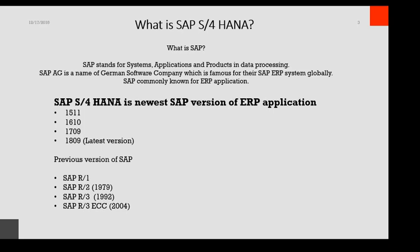There are newer versions and older versions. When we talk about historical versions, we can see that the previous versions of SAP include SAP R1, SAP R2 in 1979, SAP R3 in 1992, and SAP R3 ECC in 2004.